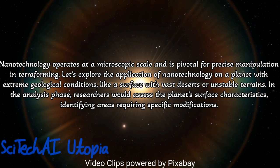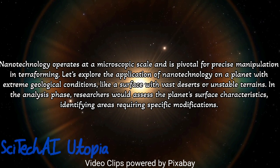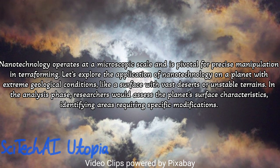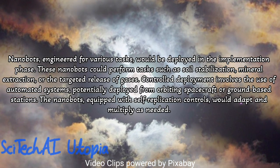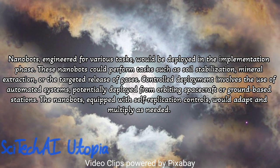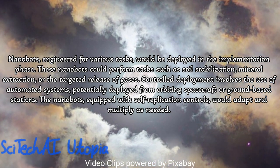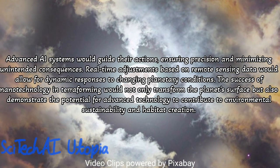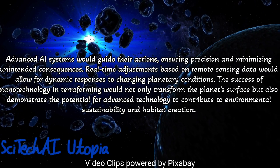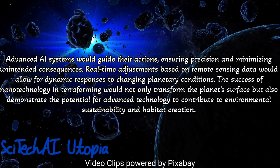Method 6: Nanotechnology. Engineer nanobots with specialized functions, including atmospheric manipulation, surface alteration, and targeted resource distribution. Develop a deployment strategy for nanobots, considering factors such as dispersal mechanisms, self-replication controls, and communication protocols to coordinate actions. Implement advanced AI systems to manage the nanobot swarm, ensuring coordination and adaptability to dynamic environmental changes. Integrate safety mechanisms to prevent unintended consequences such as nanobot malfunction or uncontrolled replication, and establish fail-safes for rapid response in case of unexpected events. Continuously monitor the nanobot swarm's progress using remote sensing and feedback loops to make real-time adjustments.